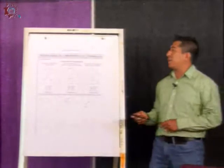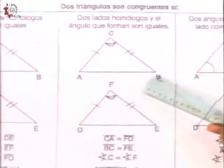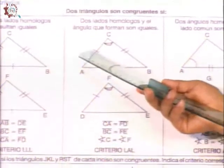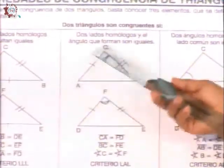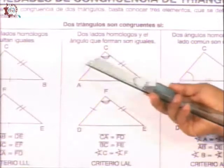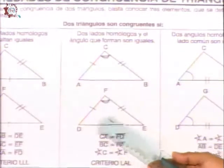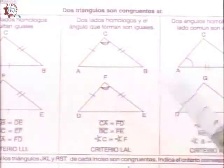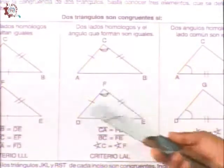Un segundo criterio que tenemos sería: dos lados homólogos y el ángulo que forman son iguales. Tenemos también un ejemplo de ello. Triángulo ABC, estamos señalando uno de sus lados, otro de sus lados, pero vamos a observar que estos lados CA y CB están formando un ángulo, los cuales deben de coincidir con el otro triángulo que tenemos en la parte inferior. Llámese el triángulo D, E, F.